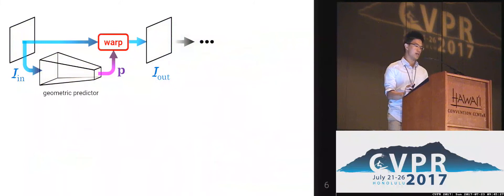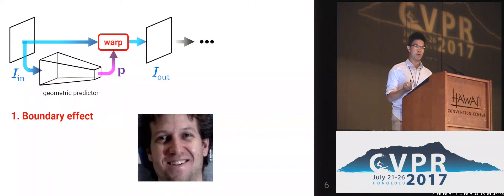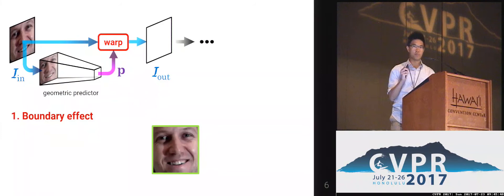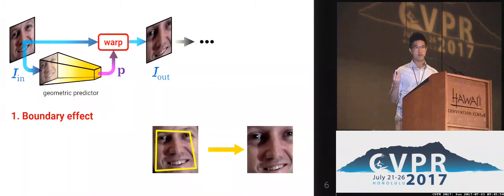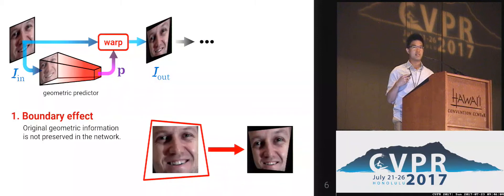Let's now look at some of the drawbacks of Spatial Transformer Networks, also known as STNs. First of all, STNs have an effect which we call the boundary effect. If we feed a cropped region of interest of an image into an STN, and if the geometric predictor learns to predict some zoom-in transformations, STNs will have no problem doing that. However, if the STN learns to zoom out the image, we will see a boundary effect, because it is unable to recover the information from the original image. So the original geometric information is not preserved within the network, because the image is propagated, not the geometric parameters.